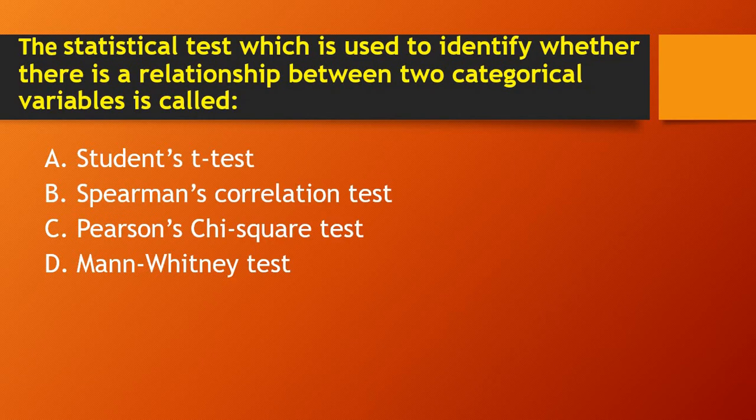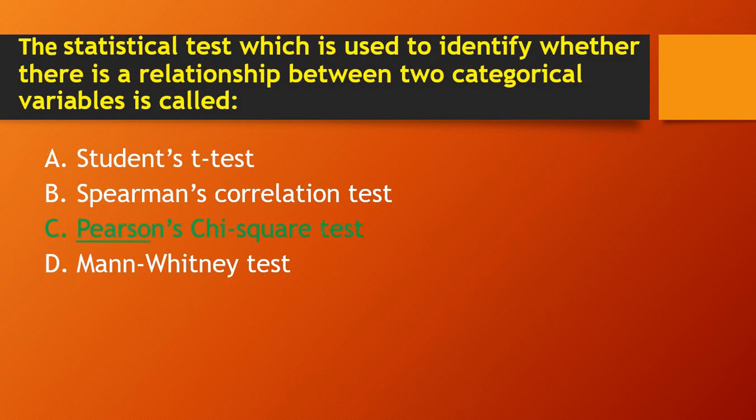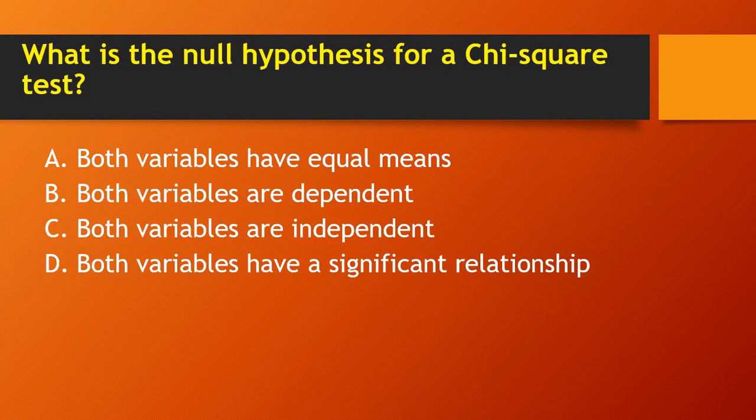Next question: the statistical test used to identify whether there is a relationship between two categorical variables is called — Student's t-test, Spearman correlation test, Pearson's chi-square test, or Mann-Whitney test? The right answer is Pearson's chi-square test.